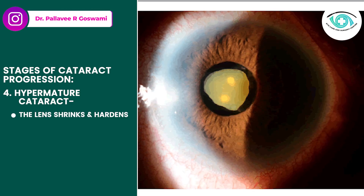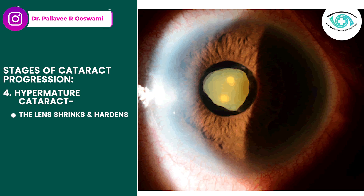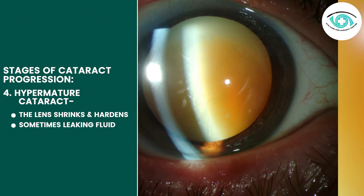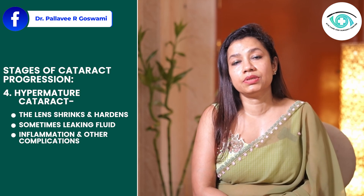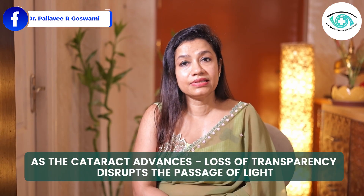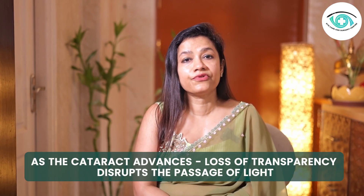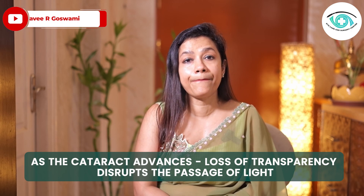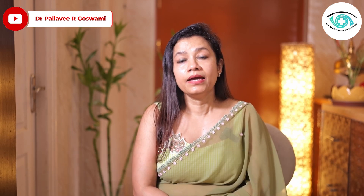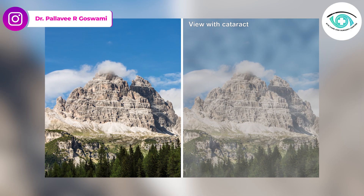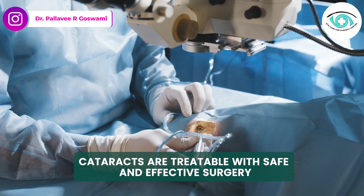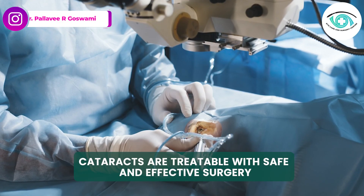In the hypermature stage — which occurs in rare cases — the lens becomes shrunken and hardened, sometimes even leaking fluid, leading to inflammation and other complications. As the cataract advances, the loss of transparency disrupts the passage of light. It's like looking through a foggy window — you can still see, but everything is dull, blurred, and less vibrant.